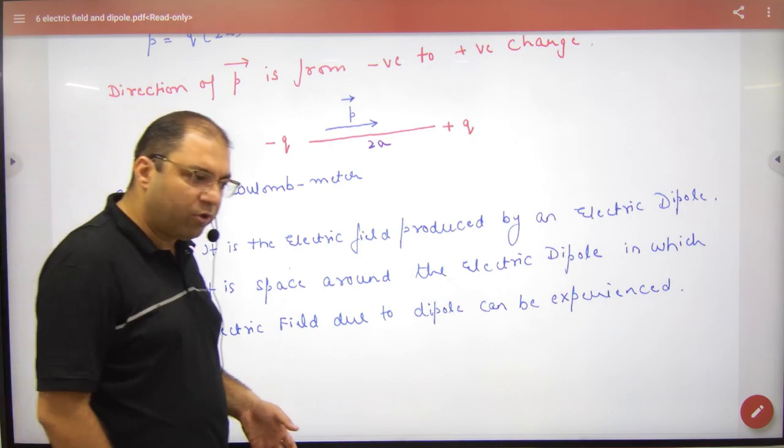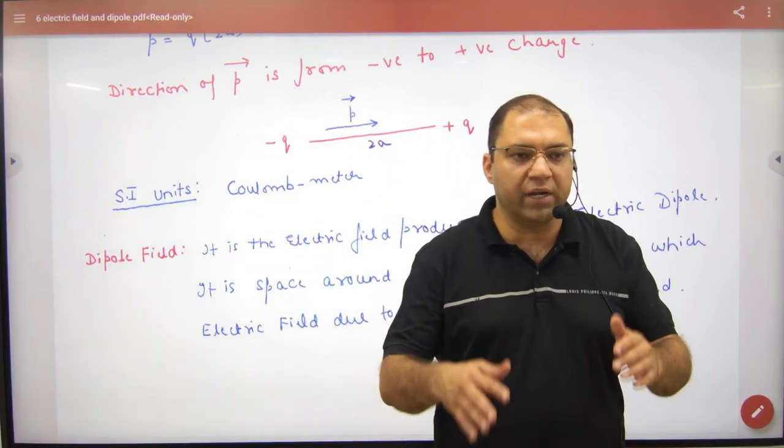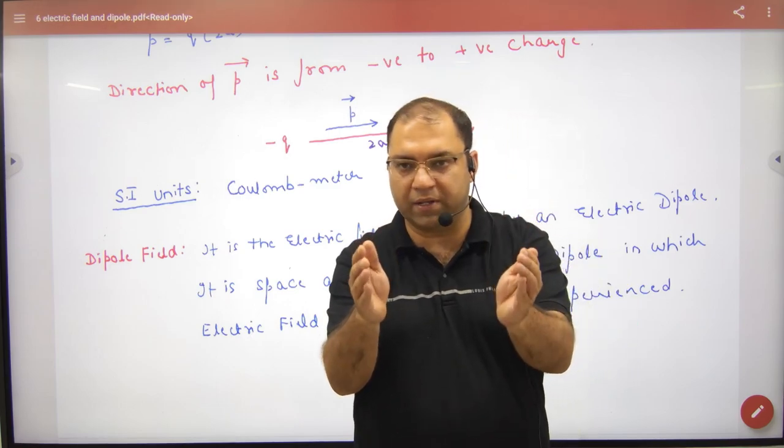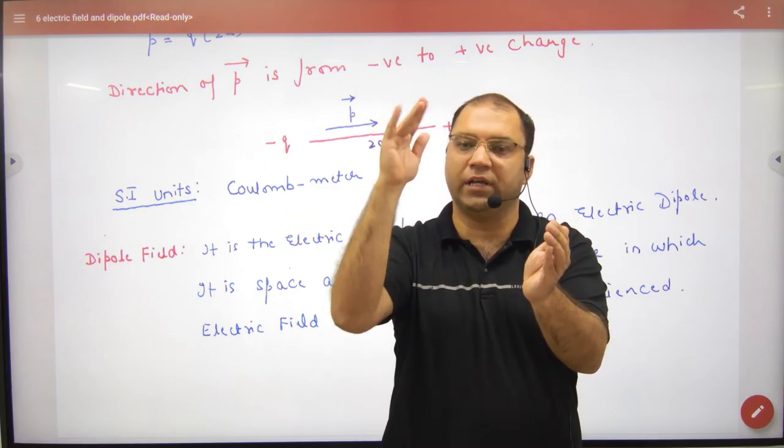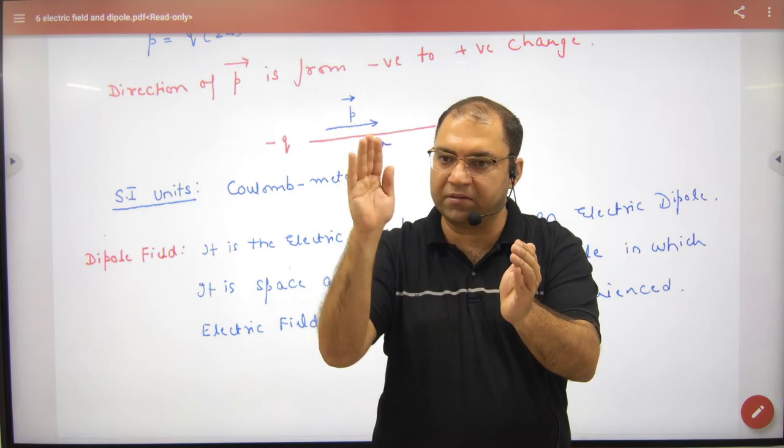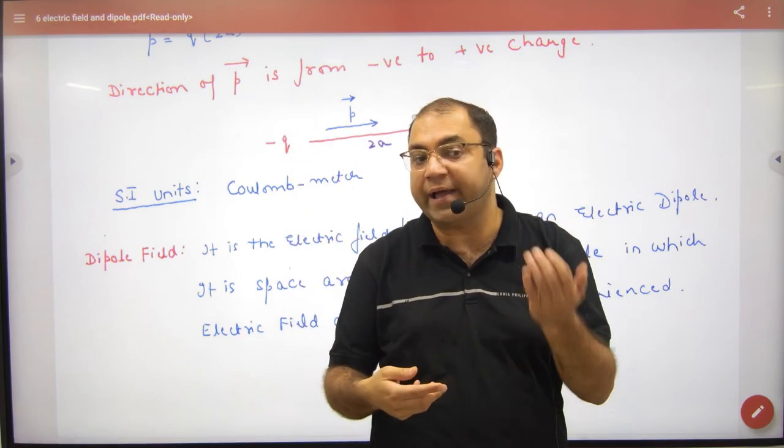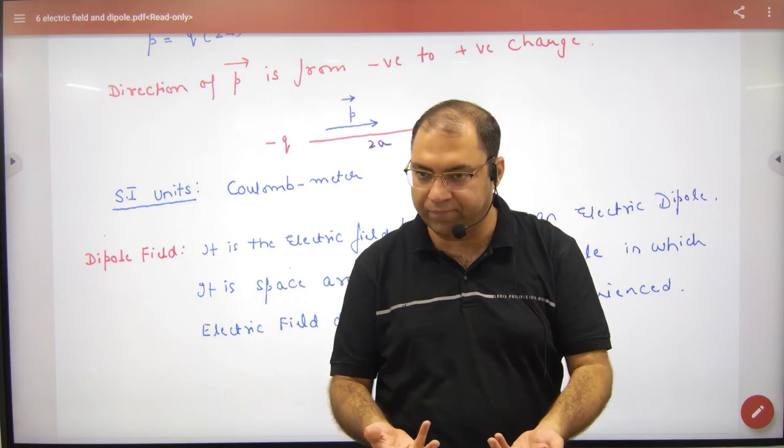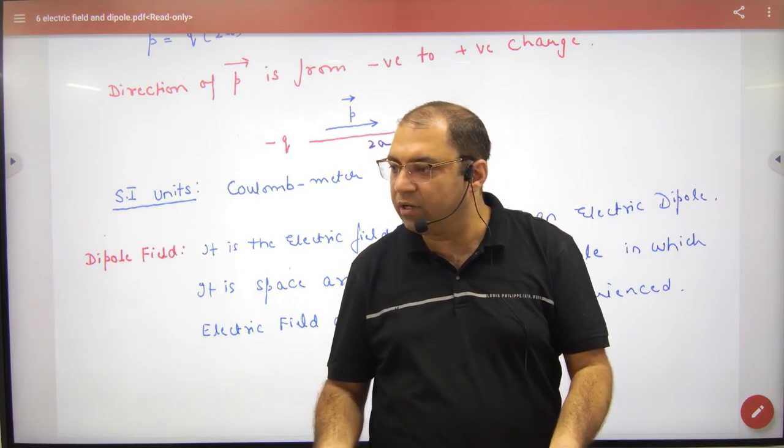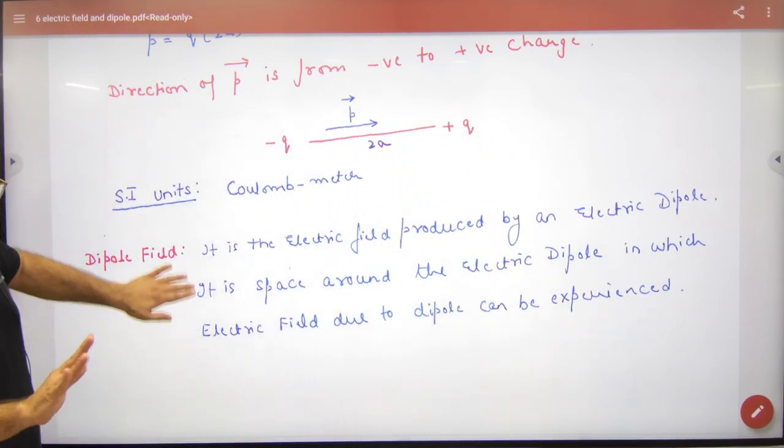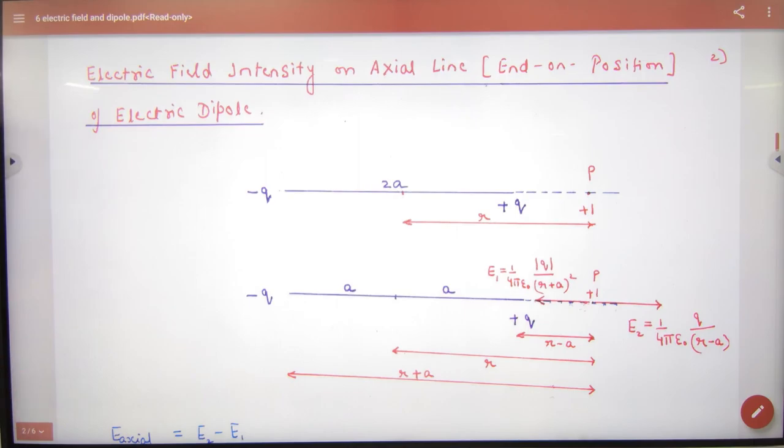Dipole field kisse bolte hai? Dipole field hai. Ek dipole liya, maine q and minus q. Usne apne aaspaas electric field generate kiya. Woh electric field kisse generate kiya? Dipole ne. Usko bolte hai dipole field. To dipole field is what? Electric field generated by electric dipole is dipole field. Thik, koi definition or kuch nahi hai. To yahan tak ye electric dipole hai.